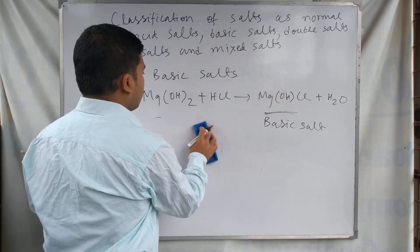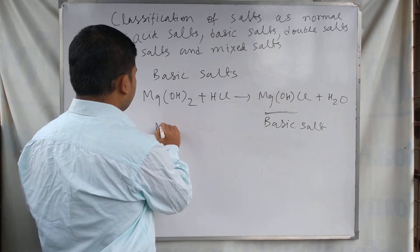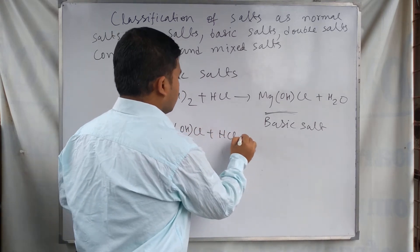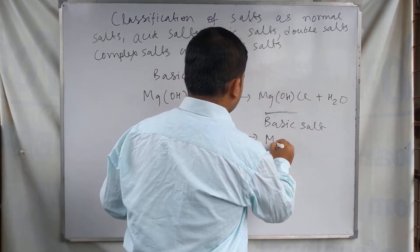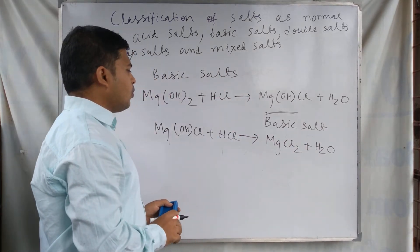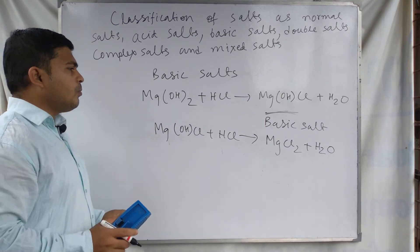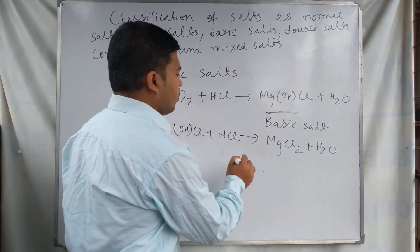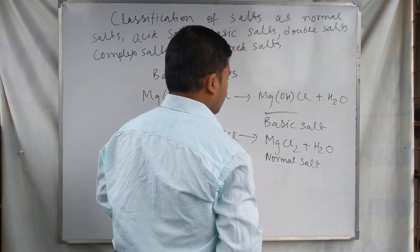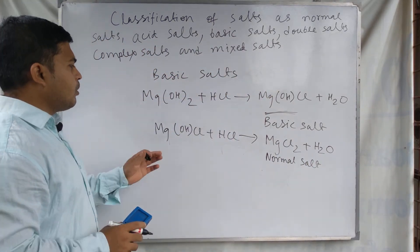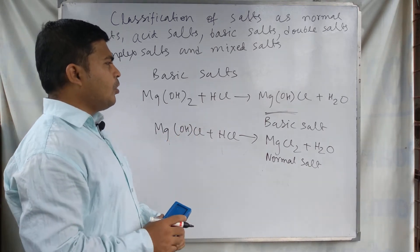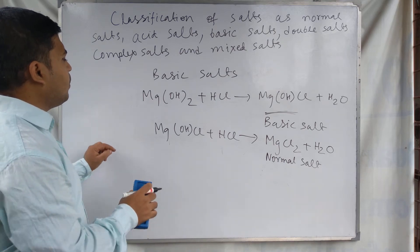On reacting further with an acid, MgOHCl reacting further with HCl will form a normal salt MgCl2 and water. So a normal salt is formed when a basic salt reacts further with an acid. A normal salt is formed by complete replacement of all OH⁻ ions. This is about the basic salt.